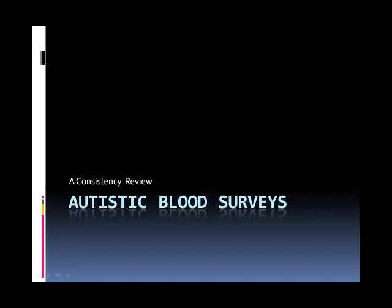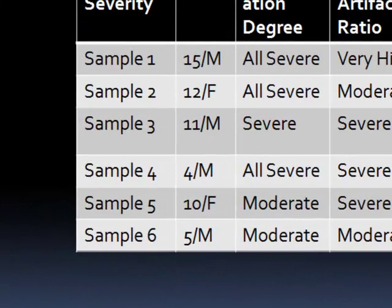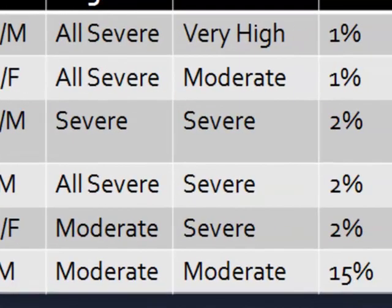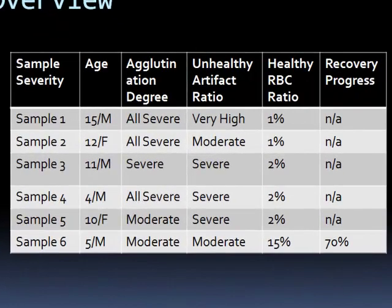This presentation illustrates irregularities in blood samples from six autistic children. Our review consists of six different cases varying in age and sex. Generally speaking, each case exhibited significant, if not severe, pathological factors which support the assertion that agglutination and ionic toxicity are significant mechanisms in the process of autism.